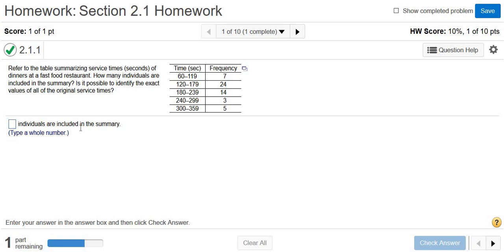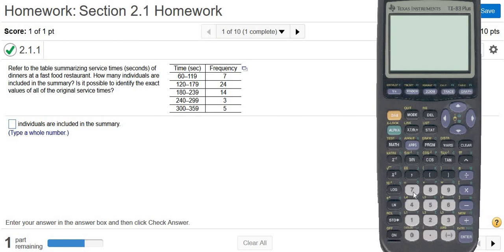The question wants to know how many individuals are included in the summary. Well, the frequencies tell us the total number of people that fall in each category, or the total number of service times. And each service time refers to a person, so these are actually just people. So all you have to do is add all these up. So it's going to be 7 plus 24 plus 14 plus 3 plus 5.